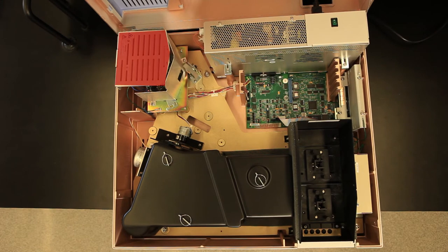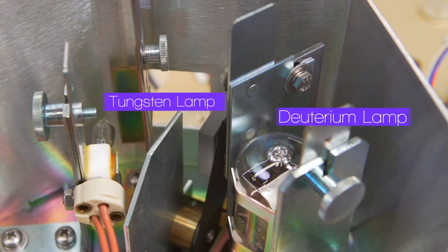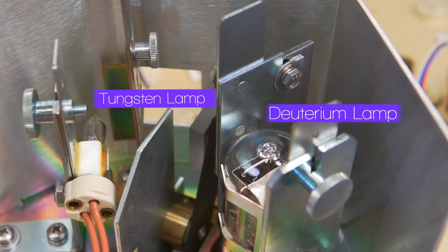There are two different light sources present: a deuterium lamp for UV wavelengths, and a tungsten halogen lamp for visible wavelengths.